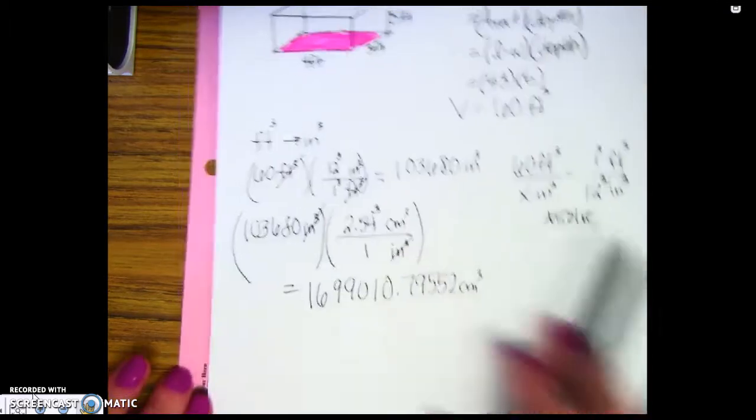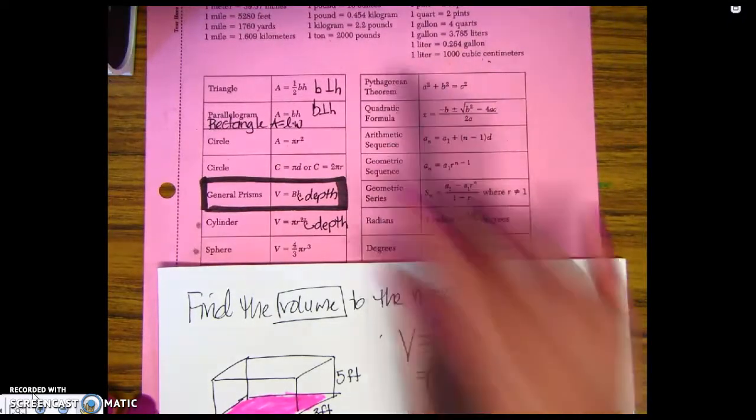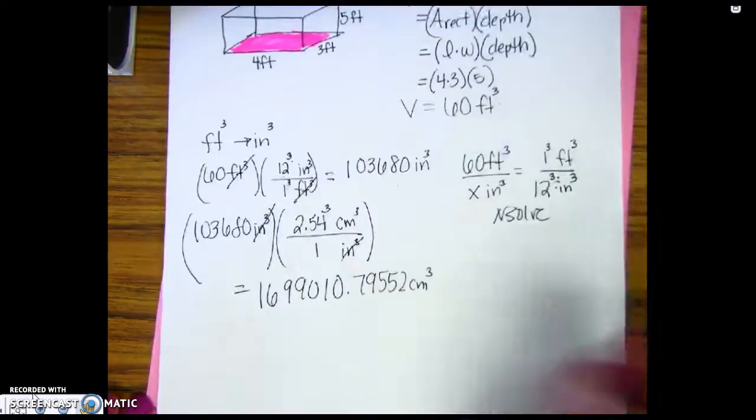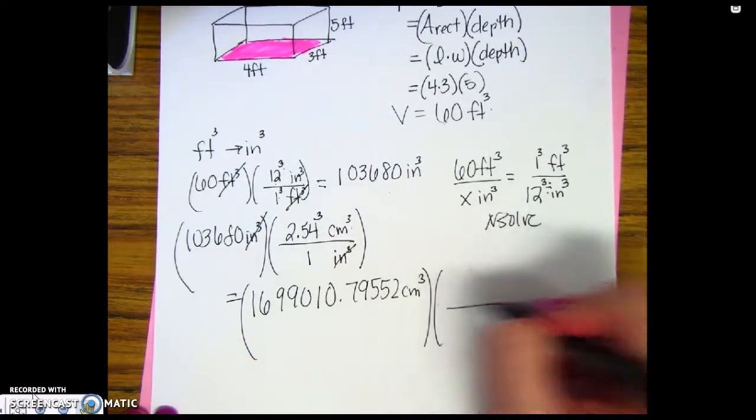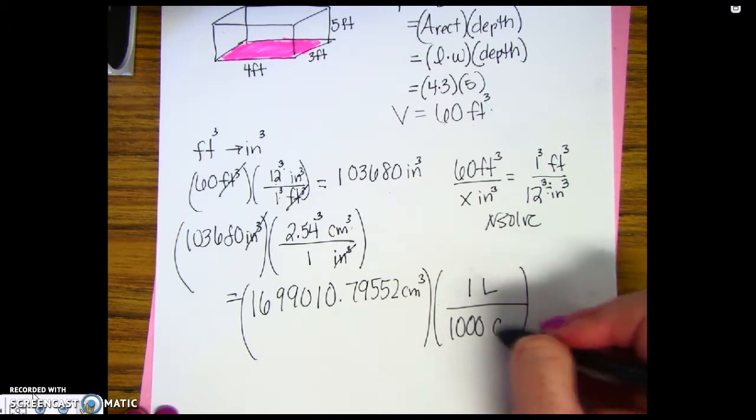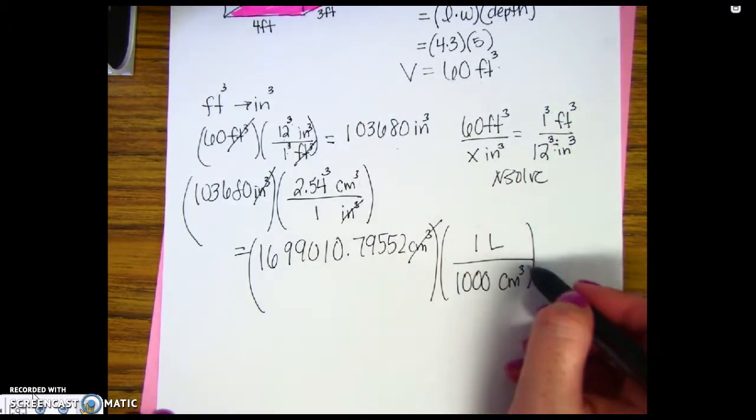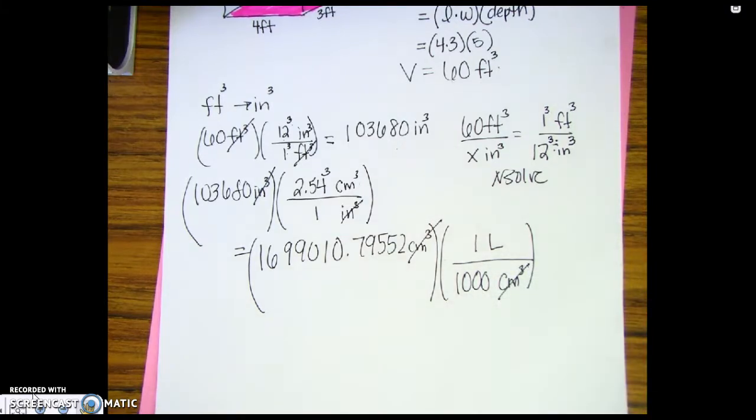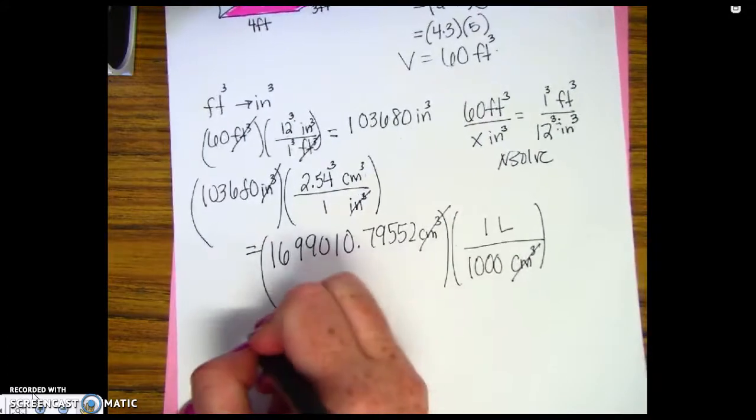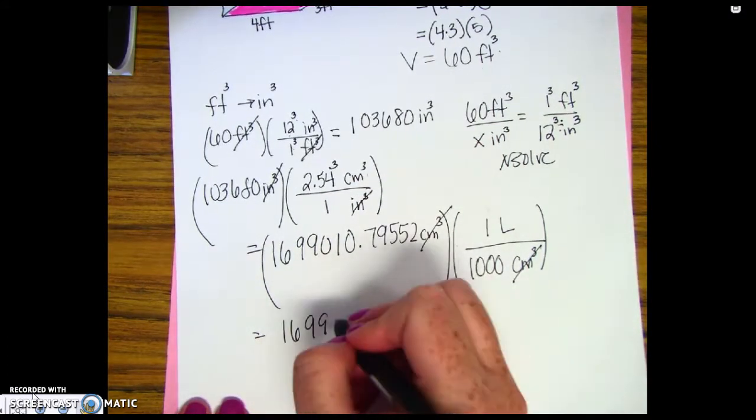Now I'm going to continue to convert centimeters cubed, cubic centimeters, to liters. One liter is one thousand cubic centimeters. Cubic centimeters divided by cubic centimeters reduces. I'm going to divide my answer in my calculator by one thousand. That leaves me with about 1,699 liters.